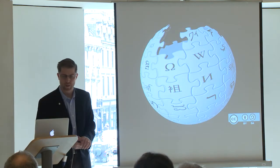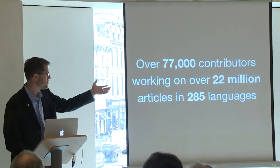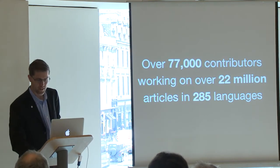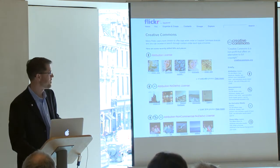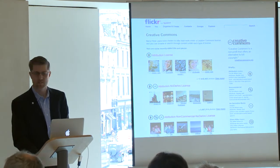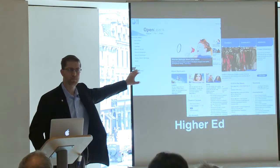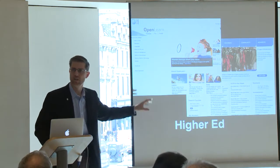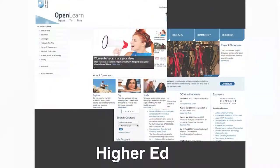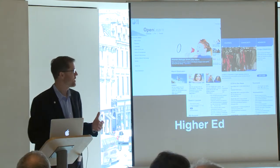There are several big adoptions out there. Wikipedia obviously has just a few materials online. Flickr has something like 175 million CC licensed images. And higher education — the Open University has an amazing site called OpenLearn, where currently they take about 5% of all their content and put it under a Creative Commons license and share it with the world. And this has real impacts.